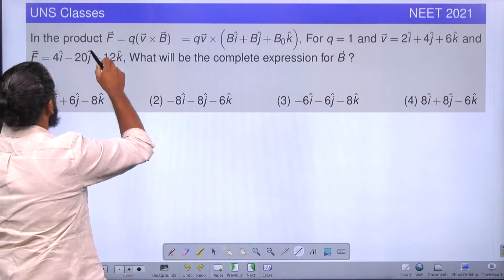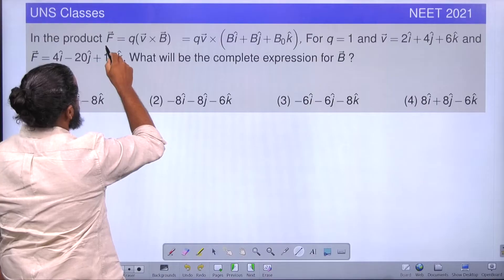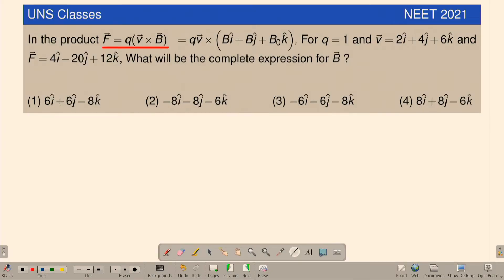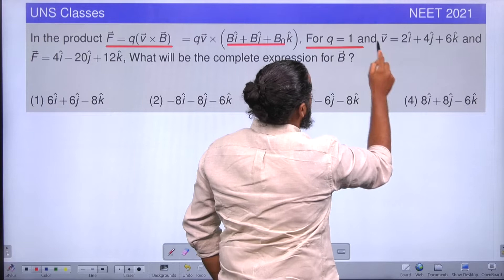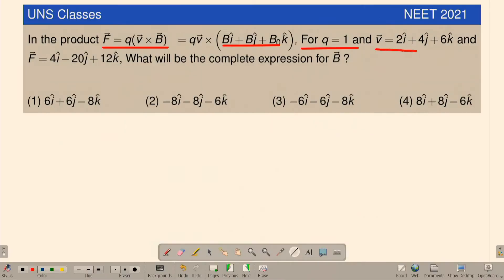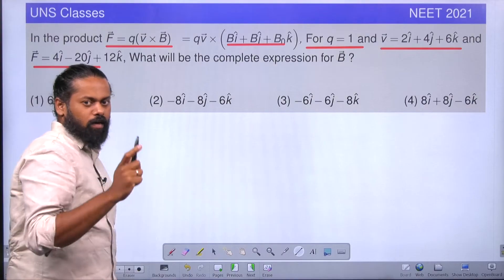See this question: In the product F = q(v × B), B is given as Bi + Bj + B₀k. For q = 1 unit, velocity is given as 2i + 4j + 6k units, and the force acting is 4i - 20j + 12k. What is the meaning of this question?